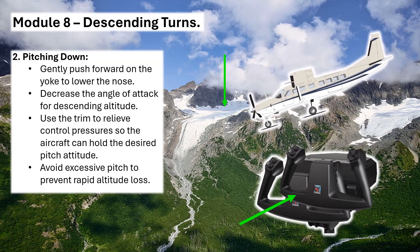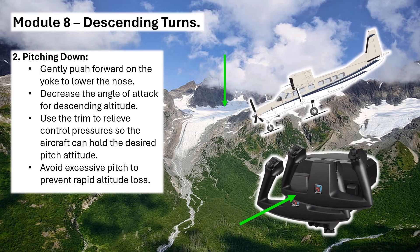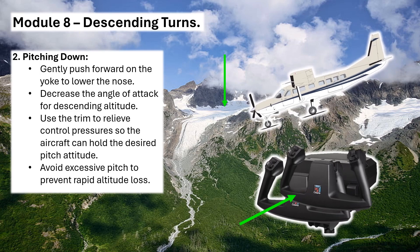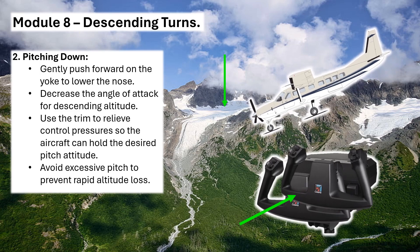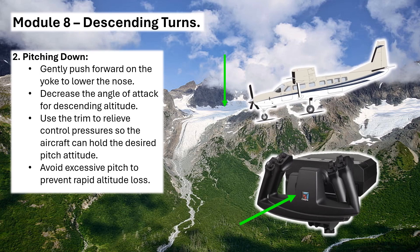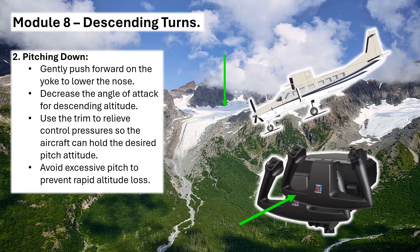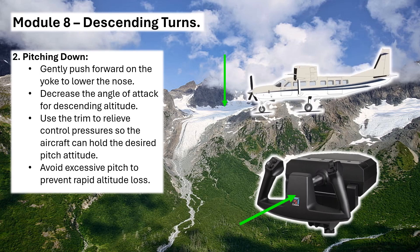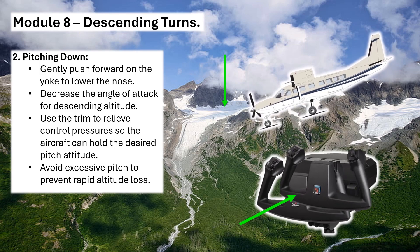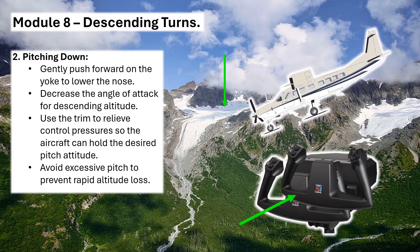2. Pitching down – gently push forward on the yoke to lower the nose. Decrease the angle of attack for descending altitude. Use the trim to relieve control pressures so the aircraft can hold the desired pitch attitude. Avoid excessive pitch to prevent rapid altitude loss.